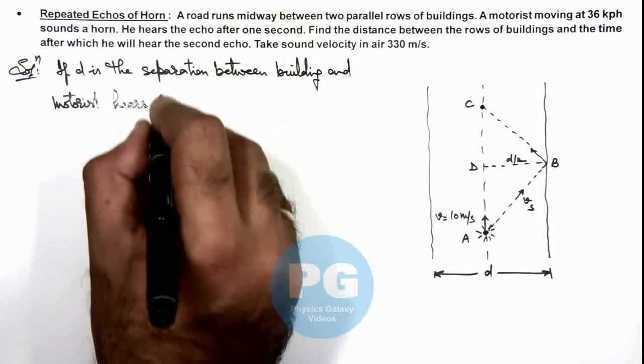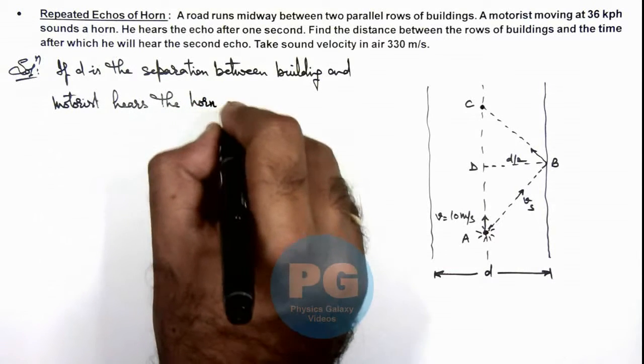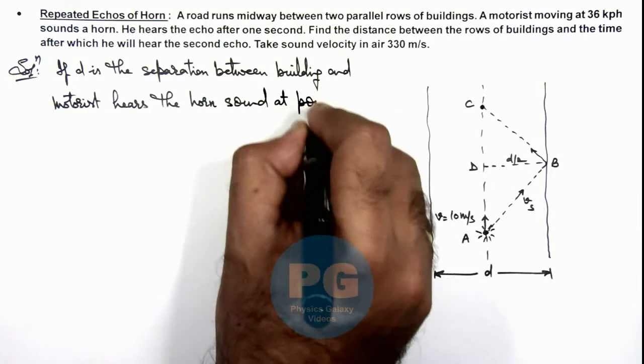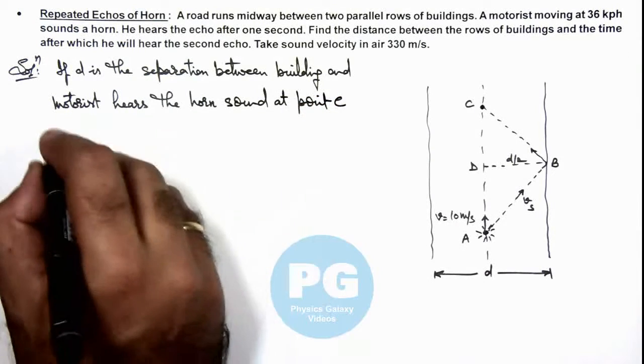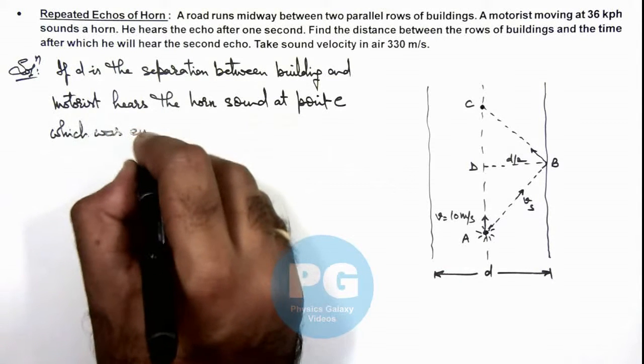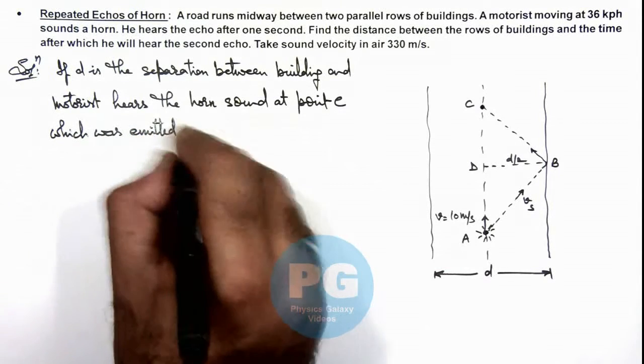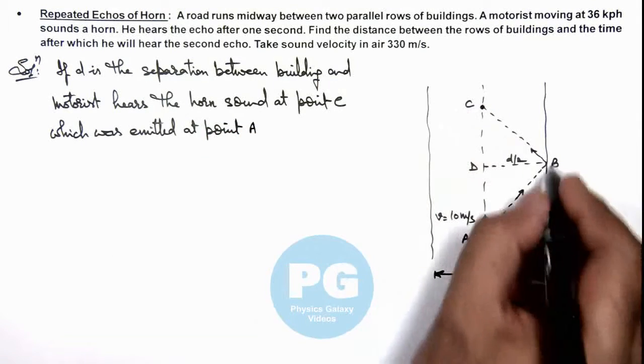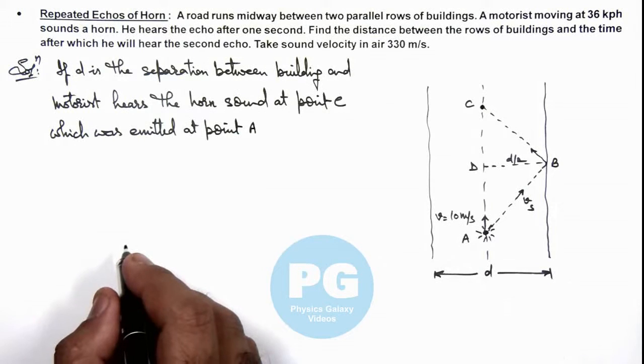Here is the horn sound at point C which was emitted at point A, which is reaching point C after reflection from a side row of building.